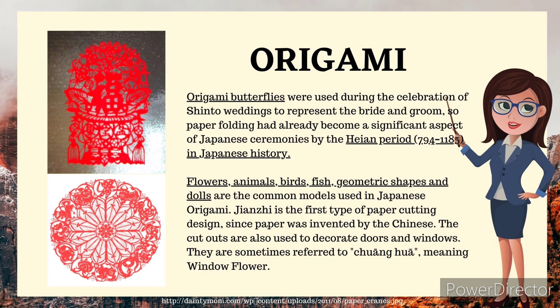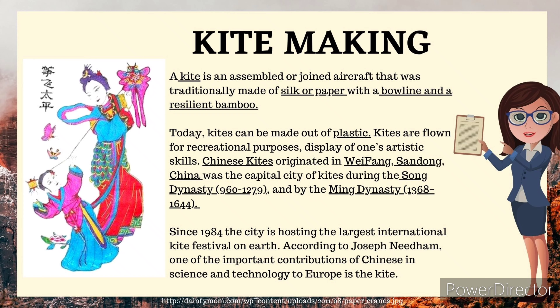Jianzhi is the first type of paper cutting design. Since paper was invented by the Chinese, the cutouts are also used to decorate doors and windows, sometimes referred to as Chuanghua, meaning 'window flower.' Kite making: A kite is an assembled aircraft traditionally made of silk or paper with a bowline and a resilient bamboo frame. Today, kites can be made out of plastic. Kites are flown for recreational purposes and display of one's artistic skills.